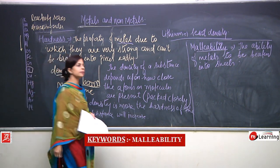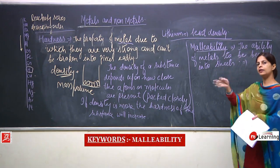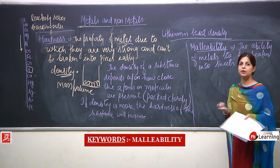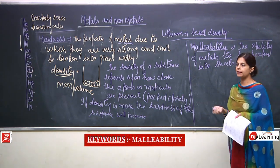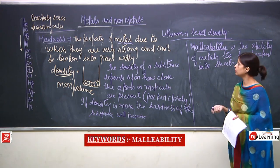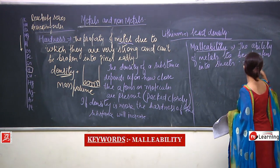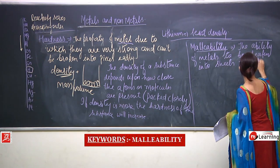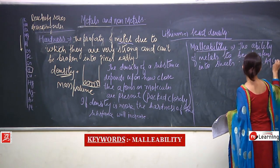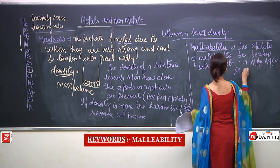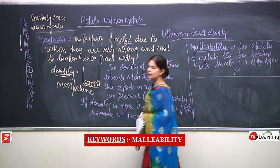Which metals are more malleable? You might have seen aluminium foil — aluminium can be converted into sheets very well. Gold (Au) sheets, silver sheets, copper sheets, and even iron can be converted into sheets. This is what malleability is about.